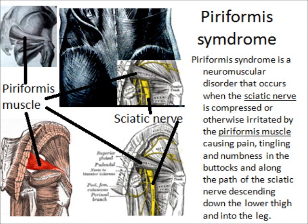The piriformis muscle is called the piriformis because it's shaped like a pear. When it's injured, it can compress onto the sciatic nerve, and people will feel numbness and pain on one side of the buttock. Sometimes the numbness and pain can radiate to the leg and even to the hip, and a lot of the time it is misdiagnosed as lumbar disc herniation.